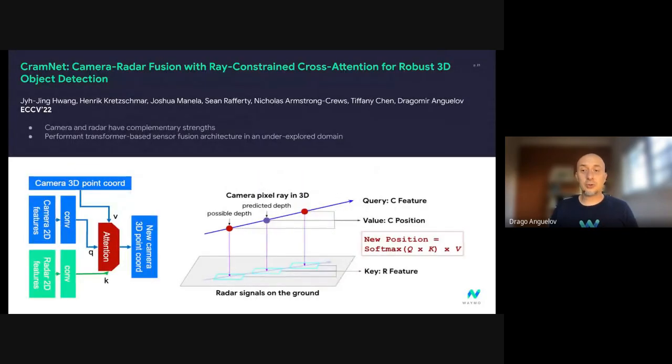Now, we don't only do lidar architecture. So we have another paper at this conference on our camera-radar fusion architecture. Please go check out the work at the conference if you're interested. Ultimately, camera and radar have very complementary strengths, but their fusion is an underexplored domain. It's very natural to fuse these two sensors. And we show how to do this well with a transformer-based sensor fusion setup. Please check out our poster to see that type of work.